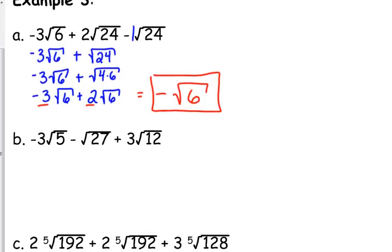Negative 3 square roots of 5 minus the square root of 27 plus 3 square roots of 12. Well, we don't have any of them that are like terms to begin with, so then we need to start analyzing them individually. Negative 3 square roots of 5, that's as simple as it will go. 5 cannot be simplified any further. The square root of 27, we can simplify that. 27 is 9 times 3, and if you can go ahead and put it as 3 square roots of 3, go for it.